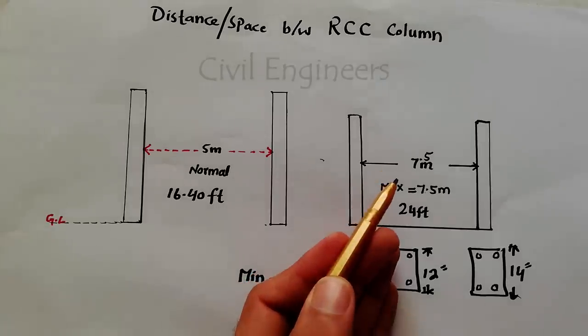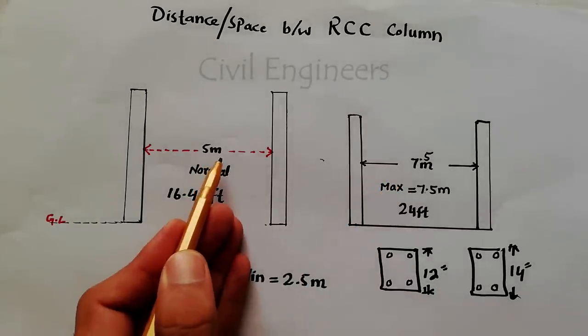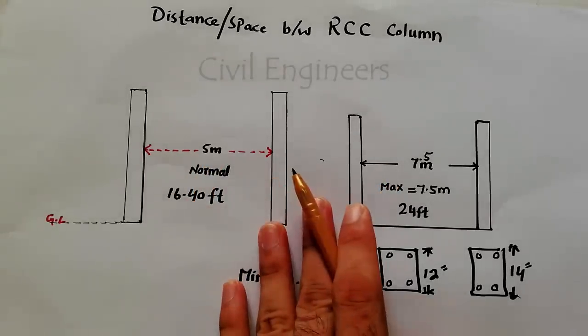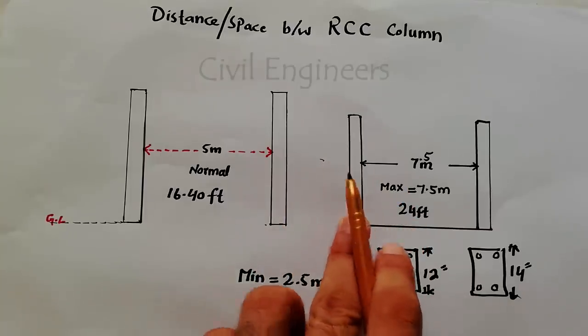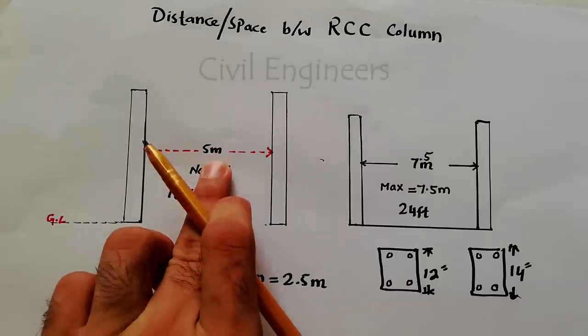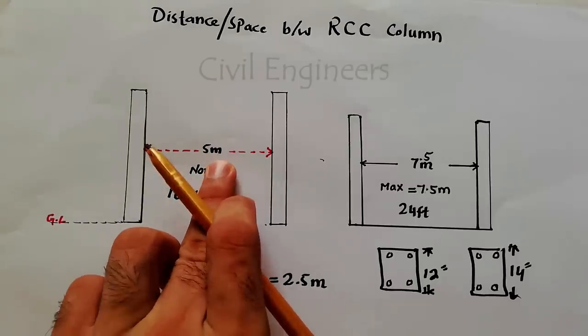But in normal condition, we can take 5 meter or 16 feet distance between two columns. If needed, you can decrease the distance. But normally, you can take this for domestic or normal buildings.